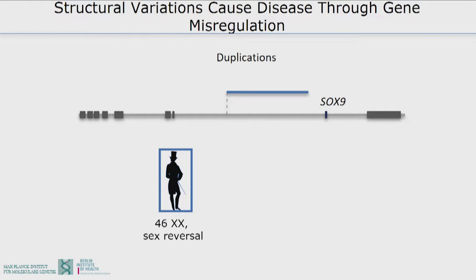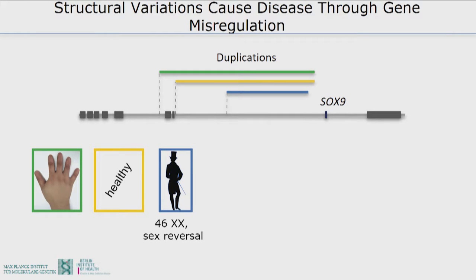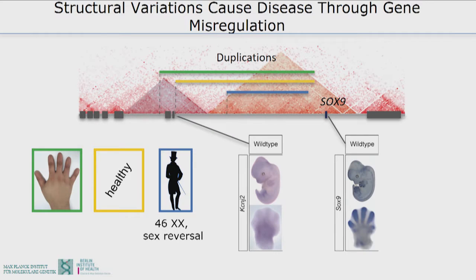Some patients have a large part of non-coding DNA duplicated and they have XX sex reversal, meaning they're male although they have two X chromosomes. But then other patients have overlapping duplications, and they're healthy. And to complicate things even more, a third kind of patients have even larger duplications and they don't have any sex development malformation.